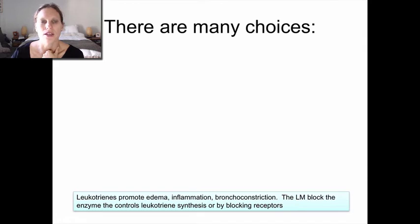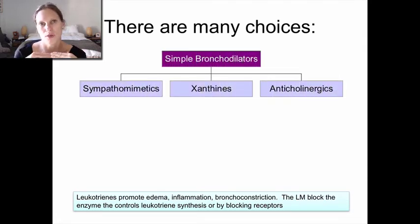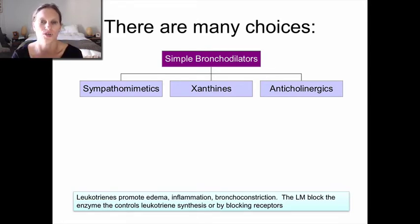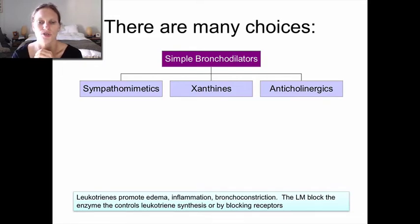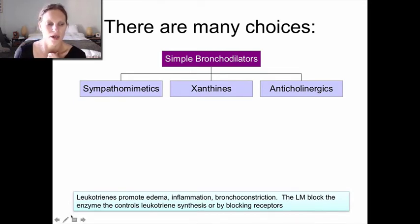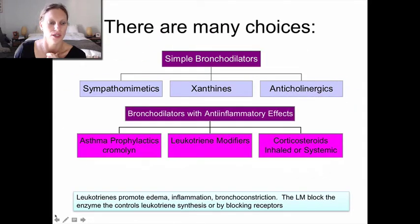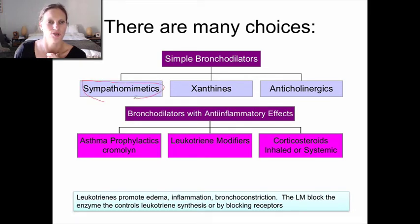When we think about drugs, there are many choices approaching this two-pronged attack. Drugs that open the airway are called simple bronchodilators, often referred to as rescue drugs because they open the airway in an acute attack. The most common rescue drugs are the sympathomimetics.